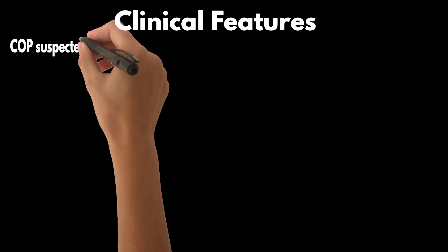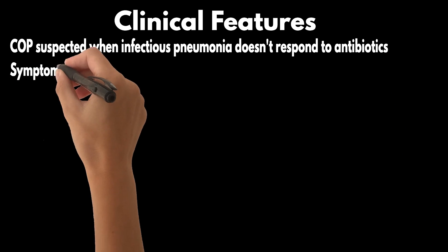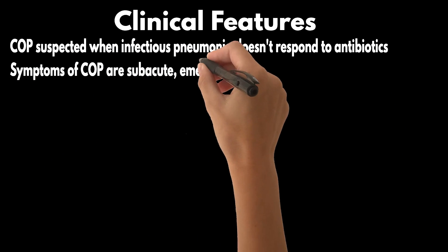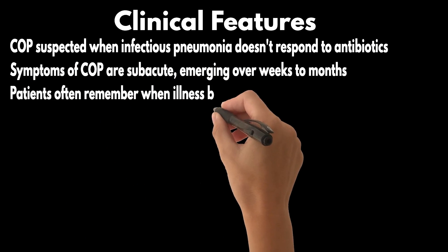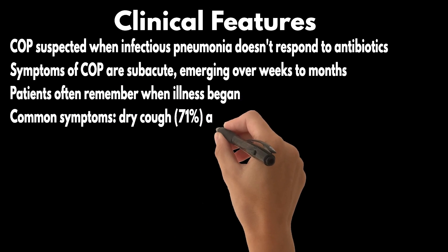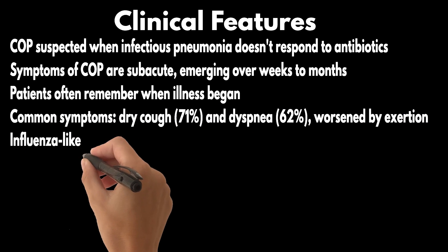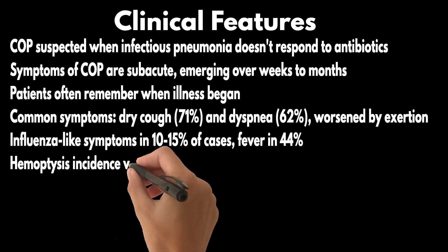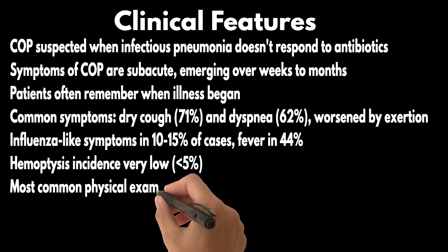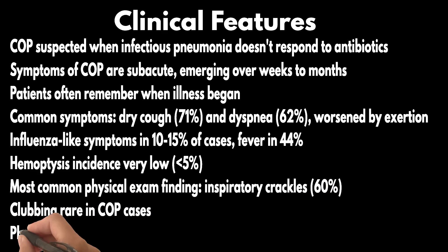What are the clinical features of COP? COP is suspected when infectious pneumonia doesn't respond to antibiotics. Symptoms are subacute, emerging over weeks to months, and patients often remember when illness began. Common symptoms include dry cough (71%) and dyspnea (62%) worsened by exertion. Influenza-like symptoms occur in 10–15% of cases, and fever in 44%. Hemoptysis incidence is very low. The most common physical exam finding is inspiratory crackles (60%). Clubbing is rare in COP cases.